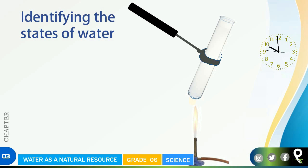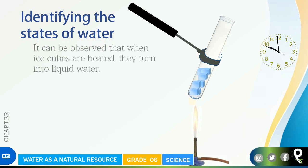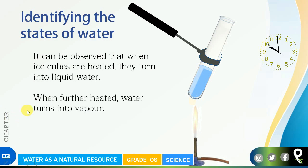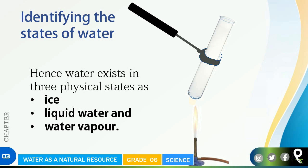It can be observed that when ice cubes are heated, they turn into liquid water. When further heated, the water turns into vapor. So three forms are happening: first it was solid ice cube, then it becomes liquid water, and then the water vapor comes and all the water is gone away. Hence, water exists in three physical states.